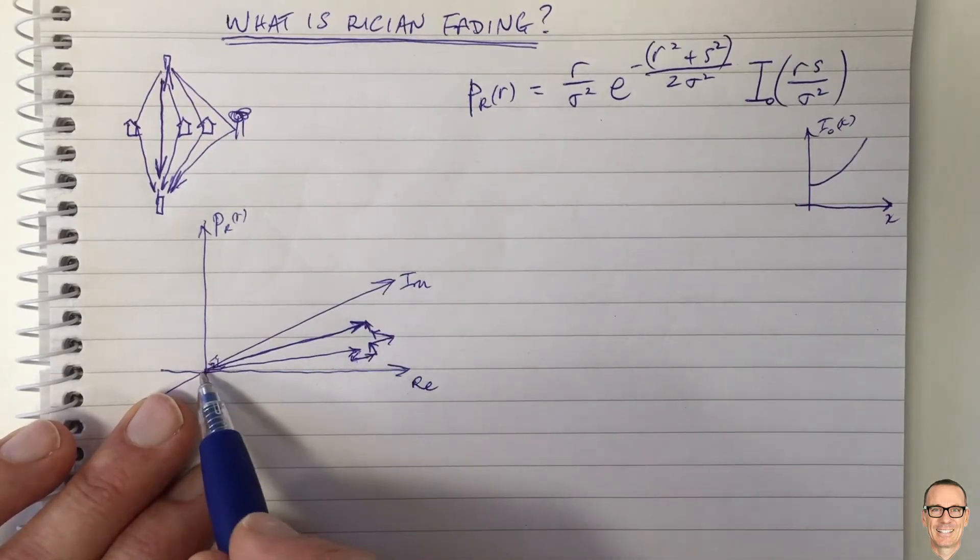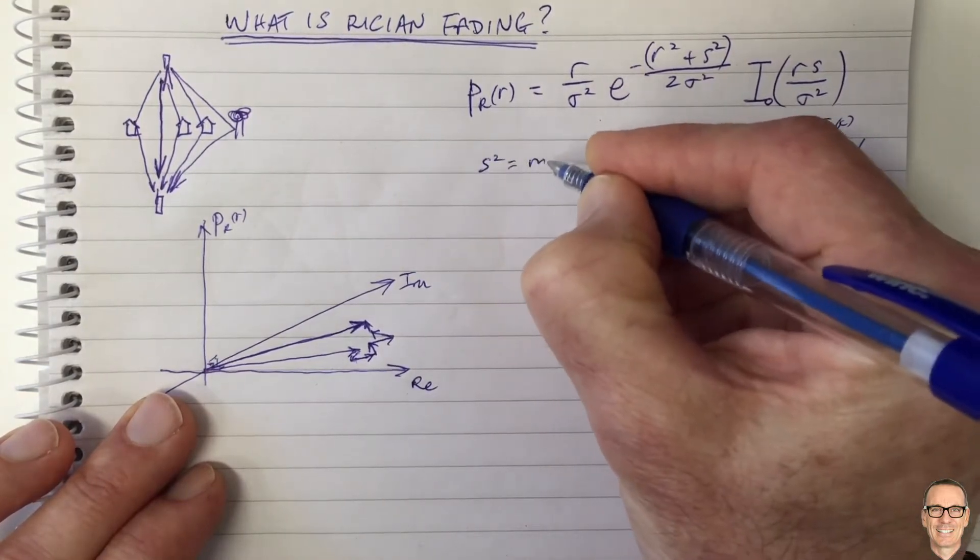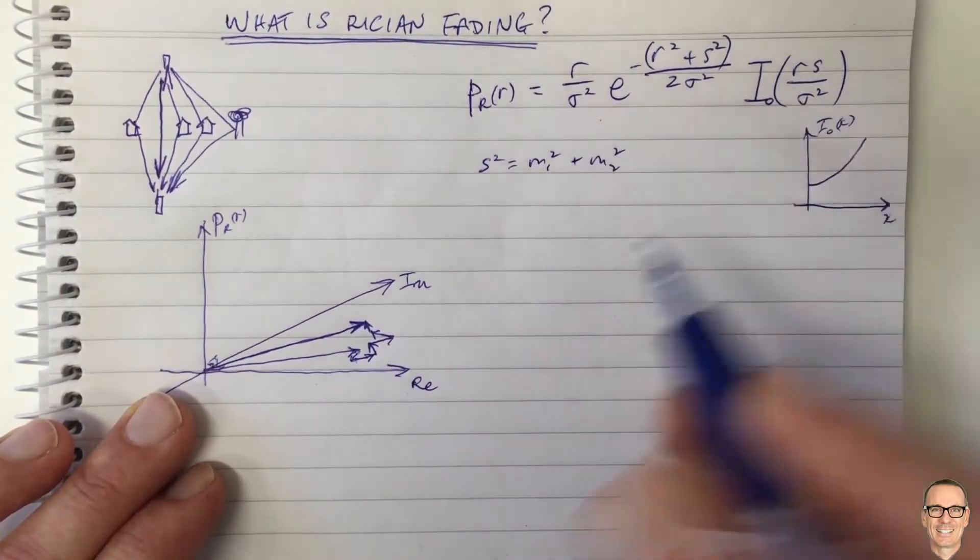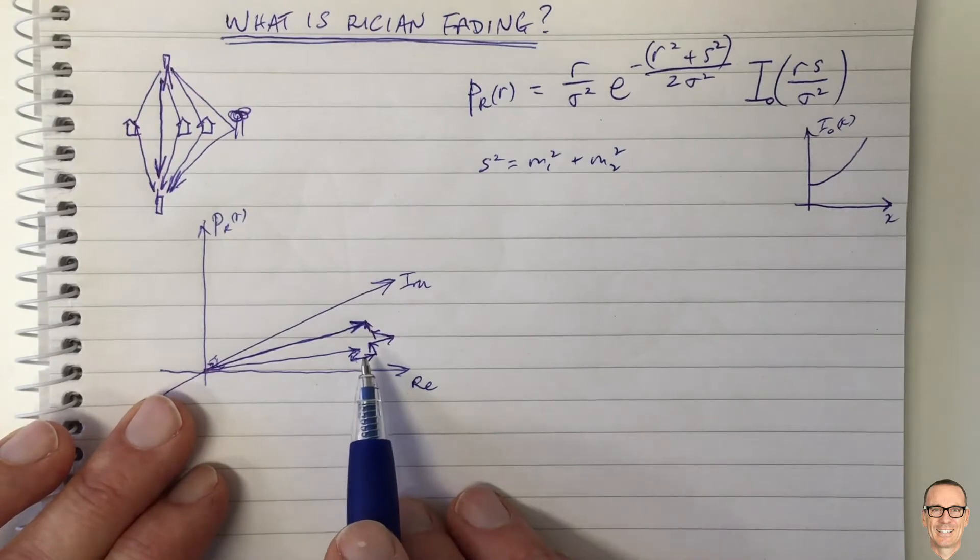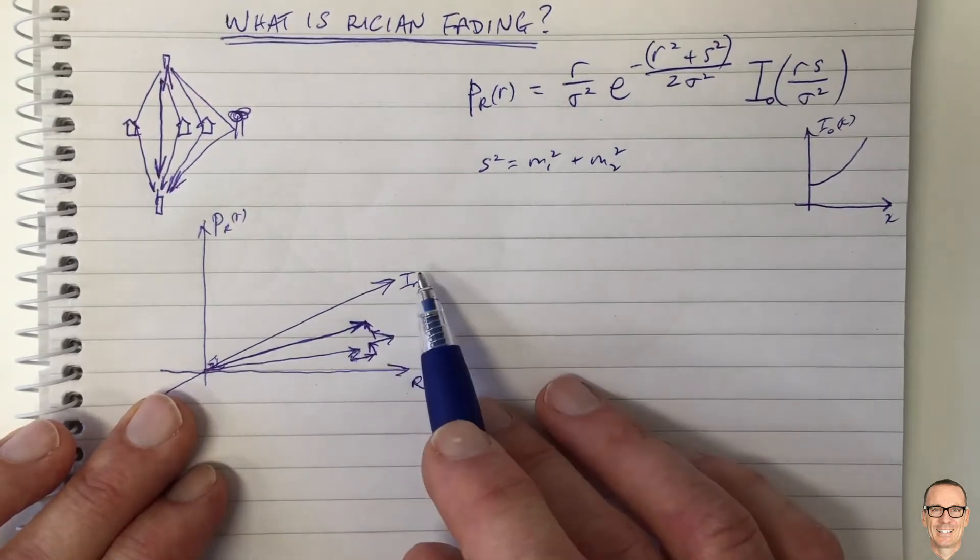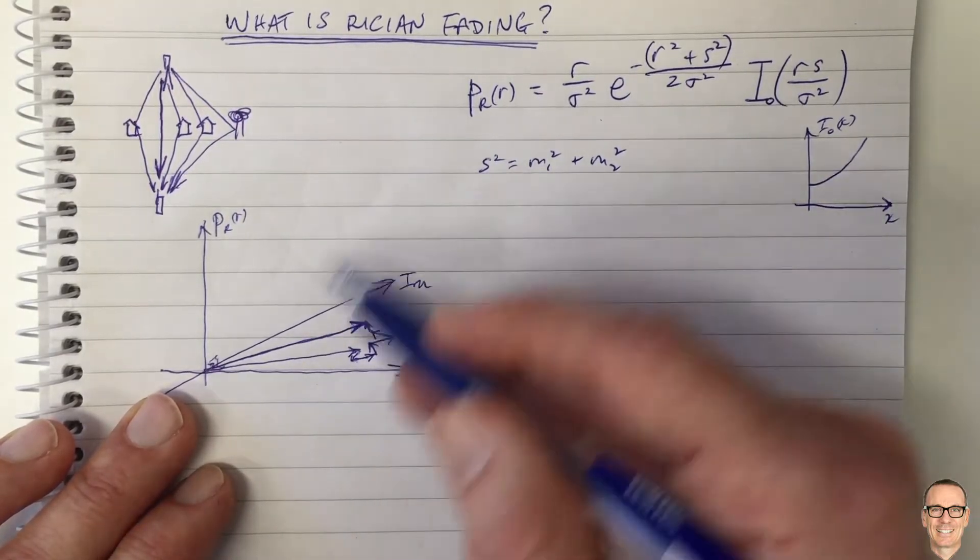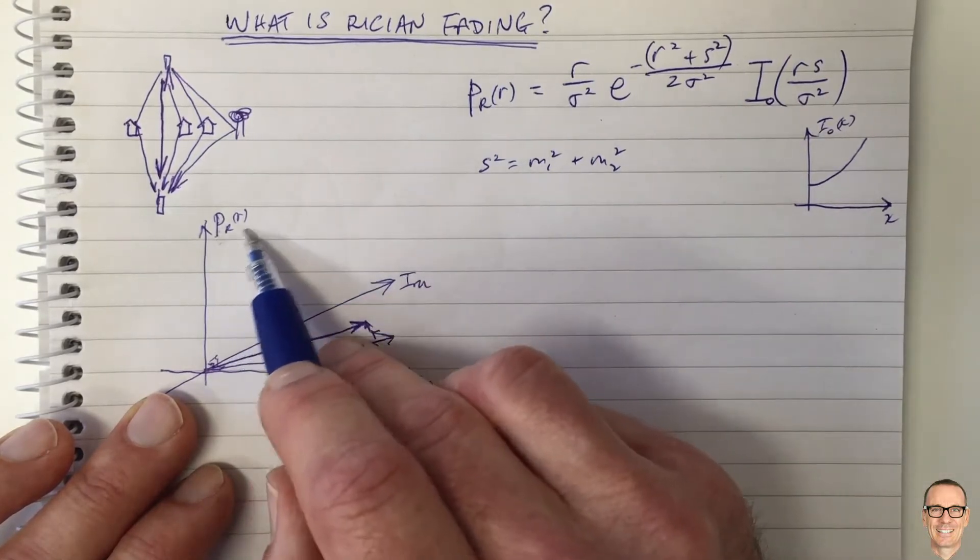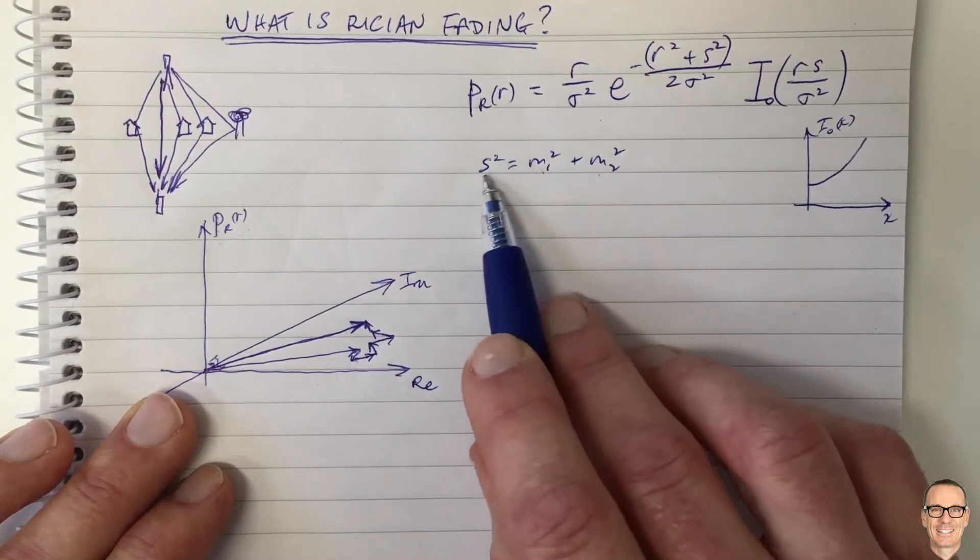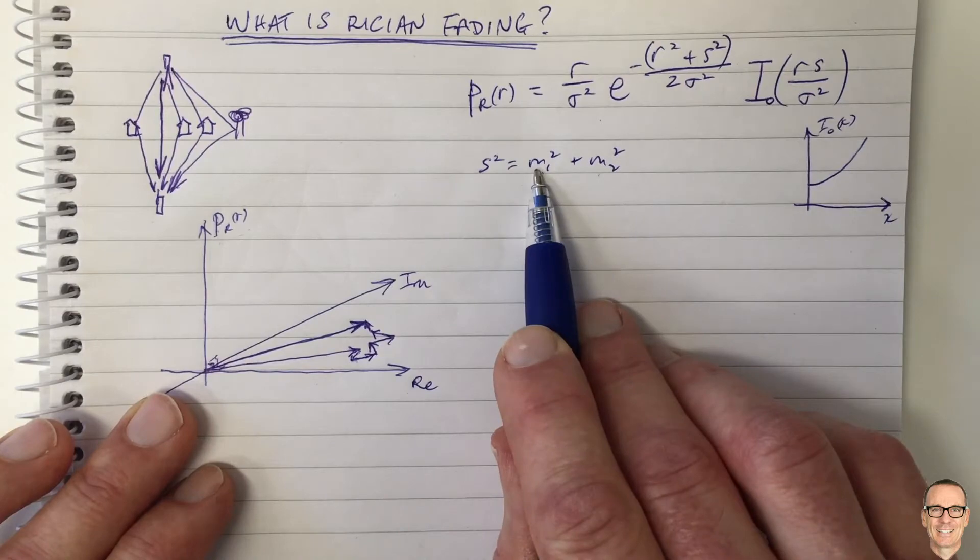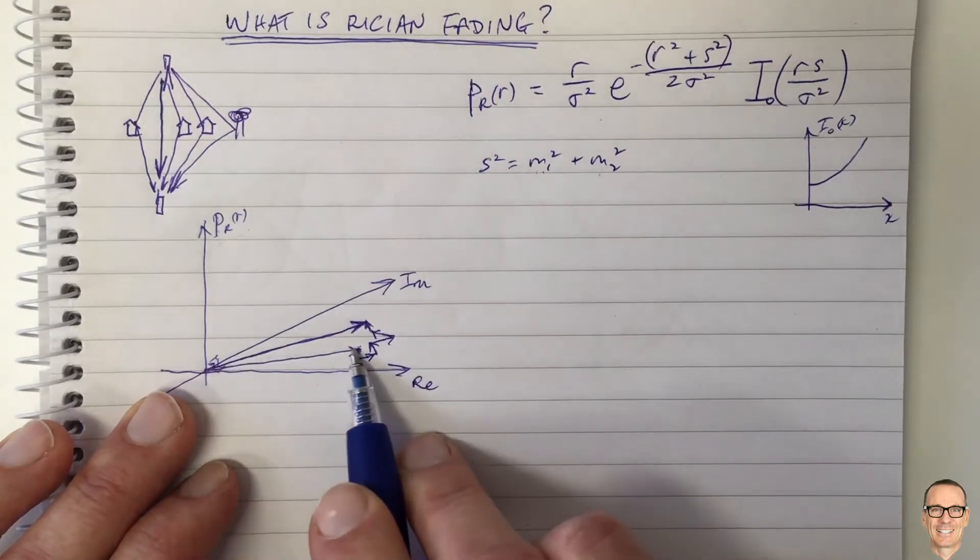Well, in this case we've got, if we define this term s, and if s squared equals m1 squared plus m2 squared, and if m1 and m2 are the mean values of two Gaussians, one in the real direction and one in the imaginary direction on the phasor plane, then exactly as in the case for Rayleigh fading, we're going to have a two-dimensional Gaussian shape in terms of the probability density. Only this time, that shape is going to sit over the place given by this s, which is from the mean of the Gaussian in real and the mean of the Gaussian in imaginary. So it's going to sit over the top of this dominant path.